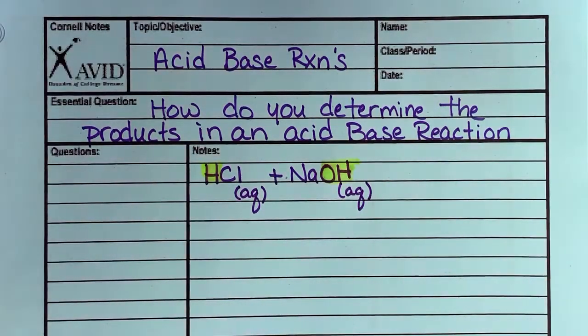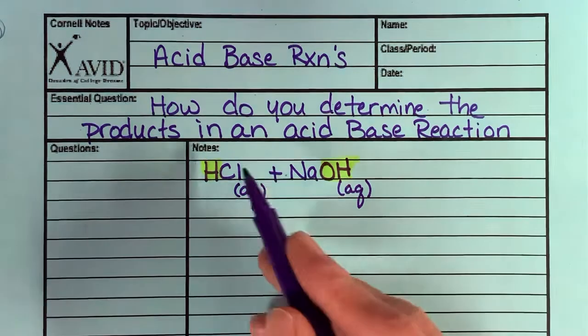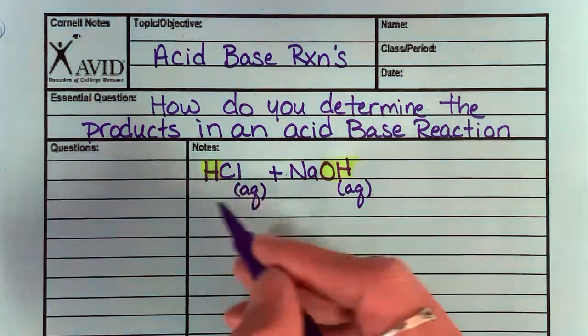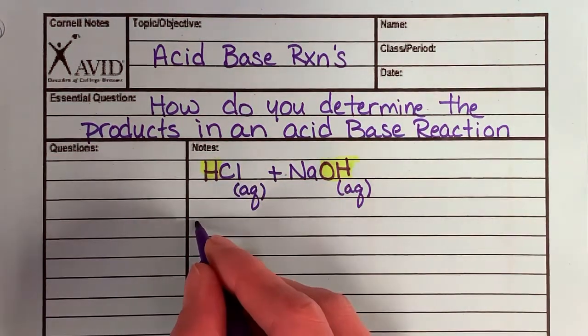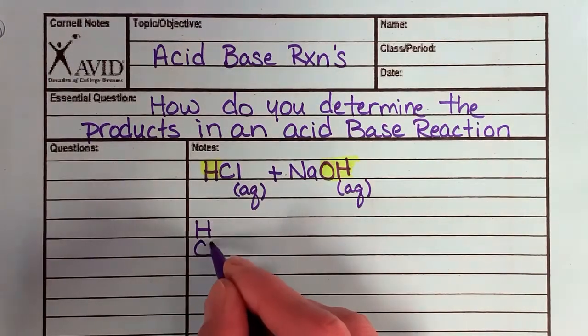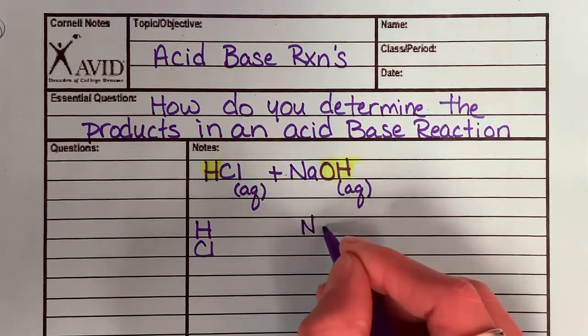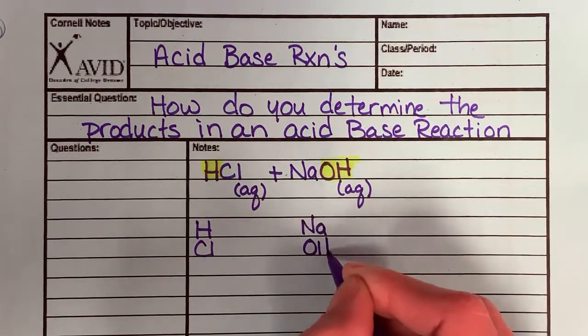And this is important for the same reason it was important in the precipitation reaction. These are ionic compounds. And when ionic compounds are dissolved in water, they break apart into ions. So my HCl is going to break up into H and Cl. My NaOH is going to break up into Na and OH.